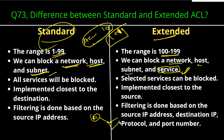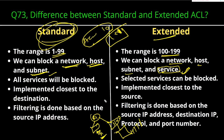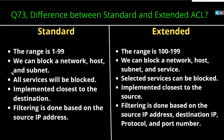For example, suppose I want to block HTTP service for a specific user. If I apply a standard ACL on the router, that machine will not be able to ping, access FTP server, or access DHCP server either — all services get blocked. So it is not possible to block a single service using a standard ACL. If you want to block only one specific service, you need to configure an extended ACL.